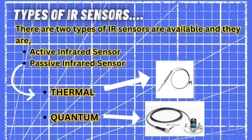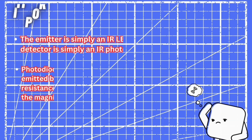Now let's see the different types of IR sensors. There are two types: the active infrared sensor and the passive infrared sensor. Active infrared sensors are the normal IR sensors we commonly use. Passive infrared sensors are also of two types: thermal and quantum infrared sensors.